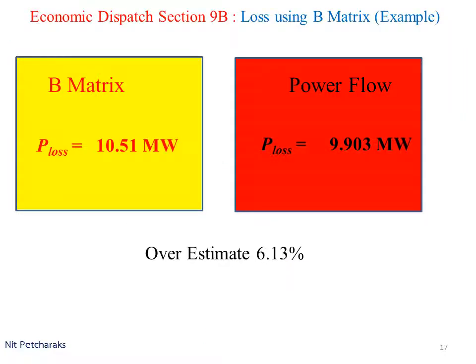Compare power loss from two methods, B-metrics and power flow. The power loss from B-metrics is 6% higher.